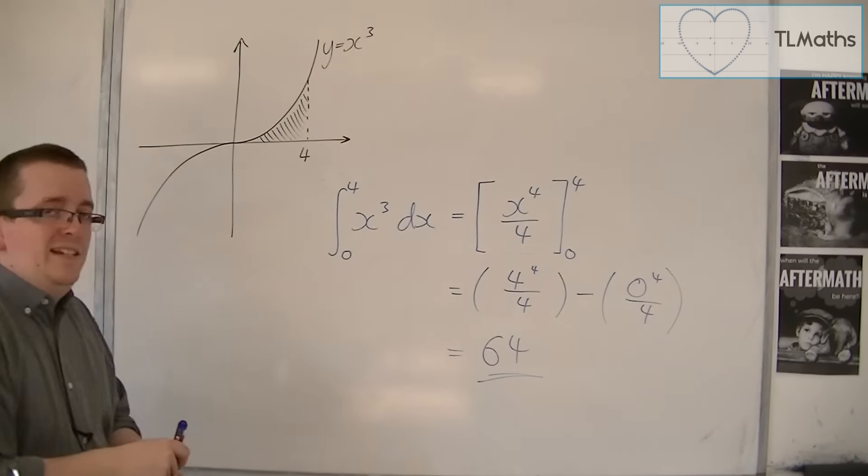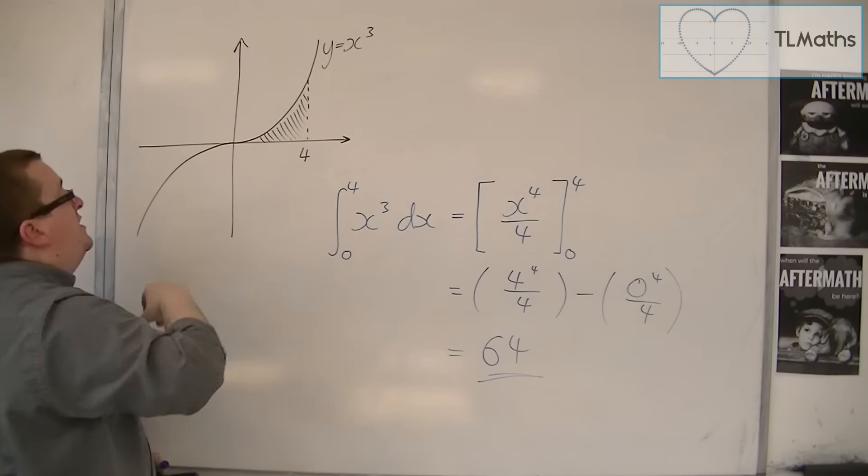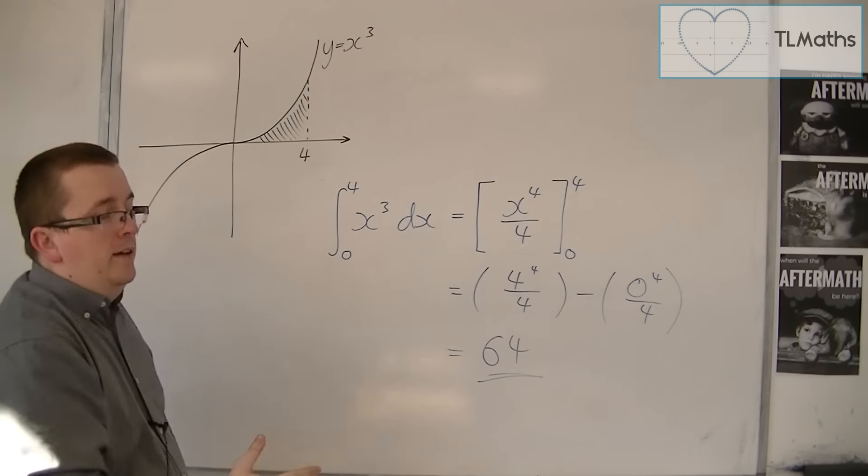And so the exact area between 0 and 4 of y is equal to x cubed is actually 64.